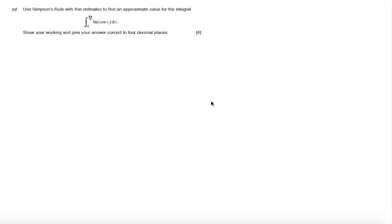In this question we're asked to use Simpson's rule with five ordinates to find an approximate value for the integral from 0 to 4π/9 of log(cos x) dx. We're asked to show our working and give the answer correct to four decimal places.